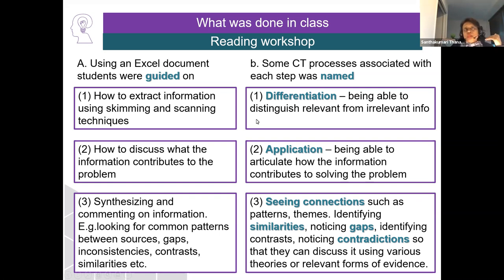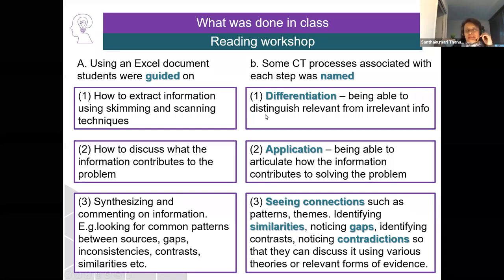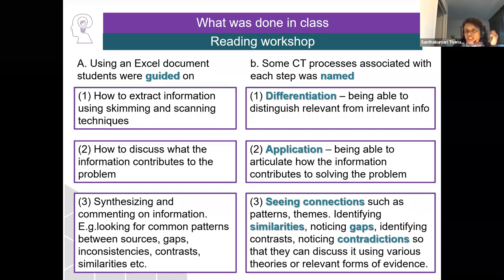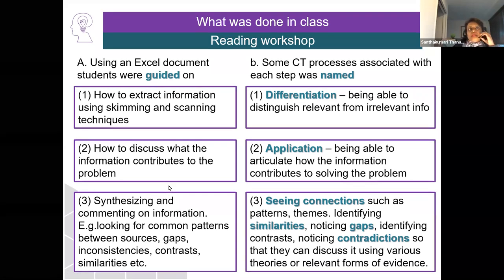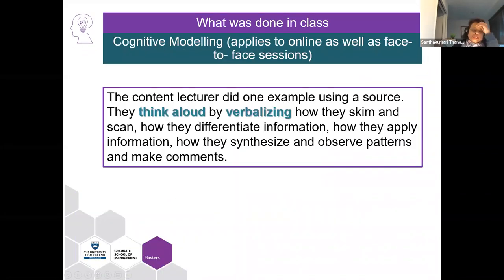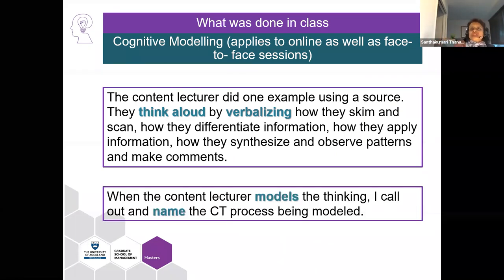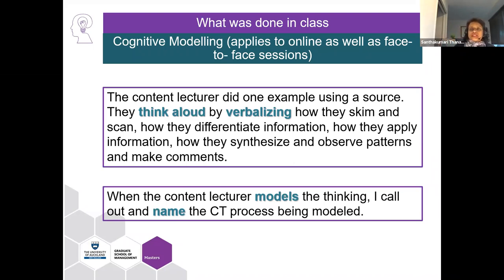While we went through the steps, we also articulated what some of the critical thinking processes were, which are displayed on the right-hand side of the screen — things like differentiation, application, seeing connections, similarities, gaps and contradictions. What happened during the class was that the lecturer used a sample source text and began to think aloud, verbalizing the thinking process while scanning and skimming, applying, and synthesizing information. Meanwhile, I was pulling out and naming what these thinking processes were so that students could match the process to the activity at hand.